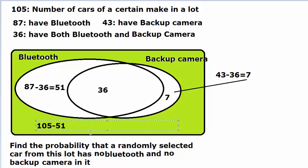So 51 are the cars with Bluetooth, no backup camera. 36 of them are with both, then seven are with backup camera and no Bluetooth. So that will be 105 minus how much? 87 plus seven is 94. So 105 minus 94 is 11.